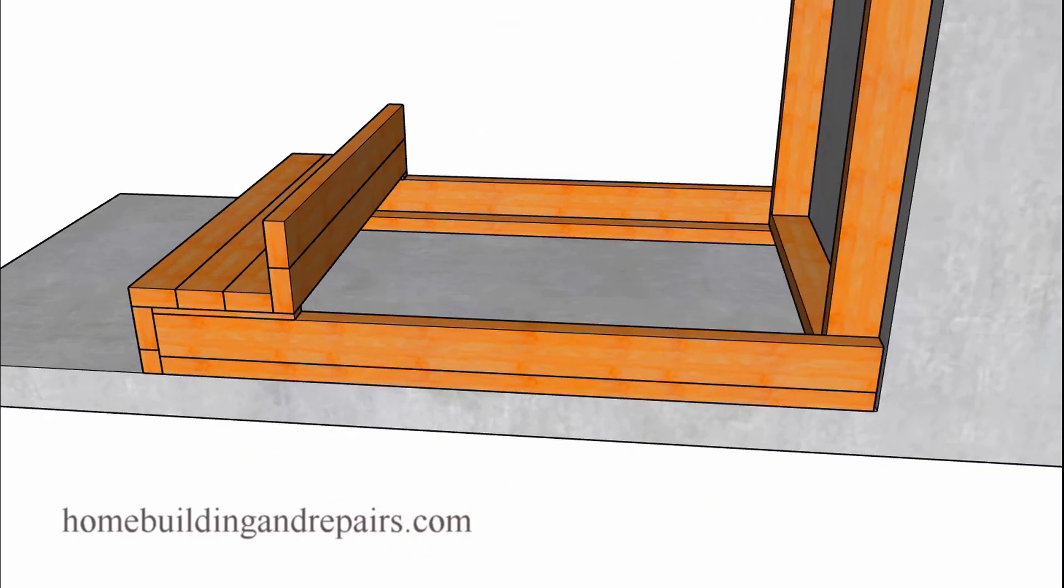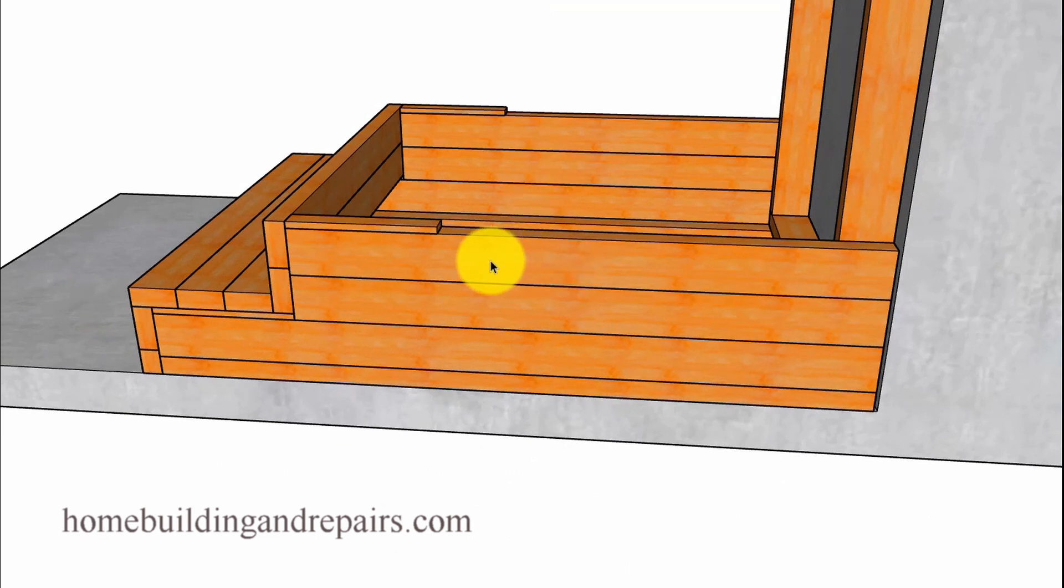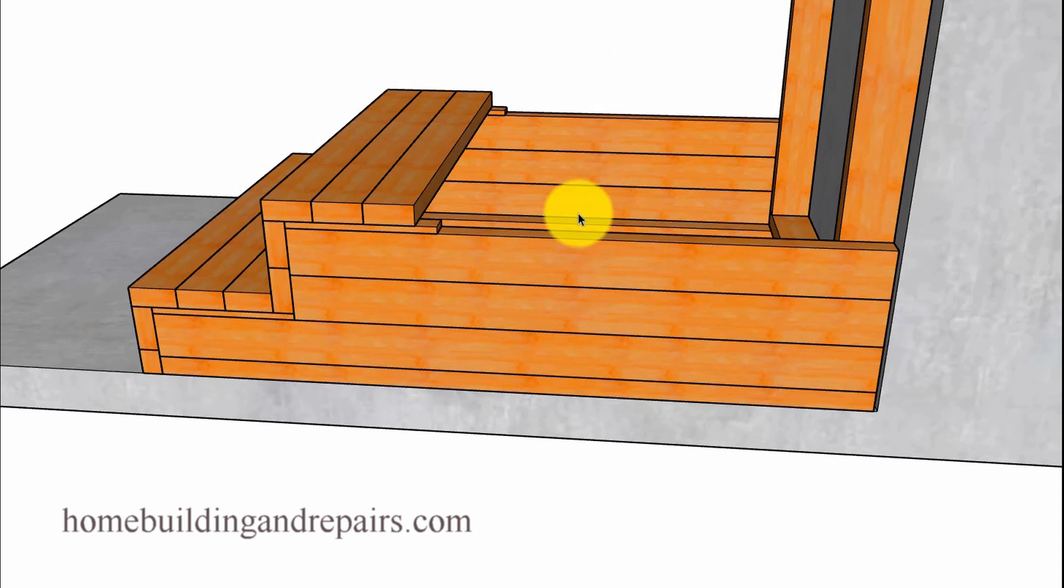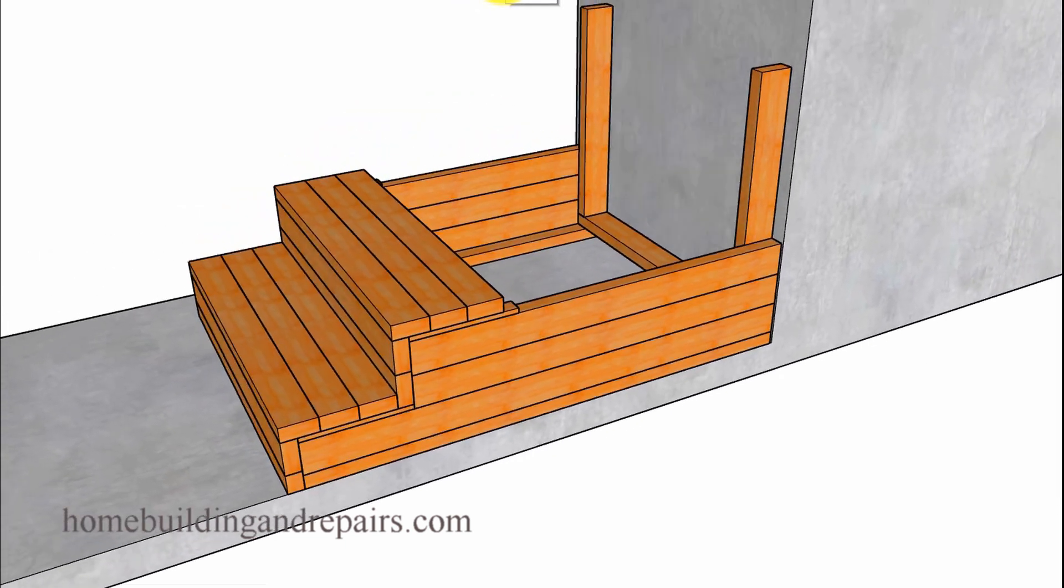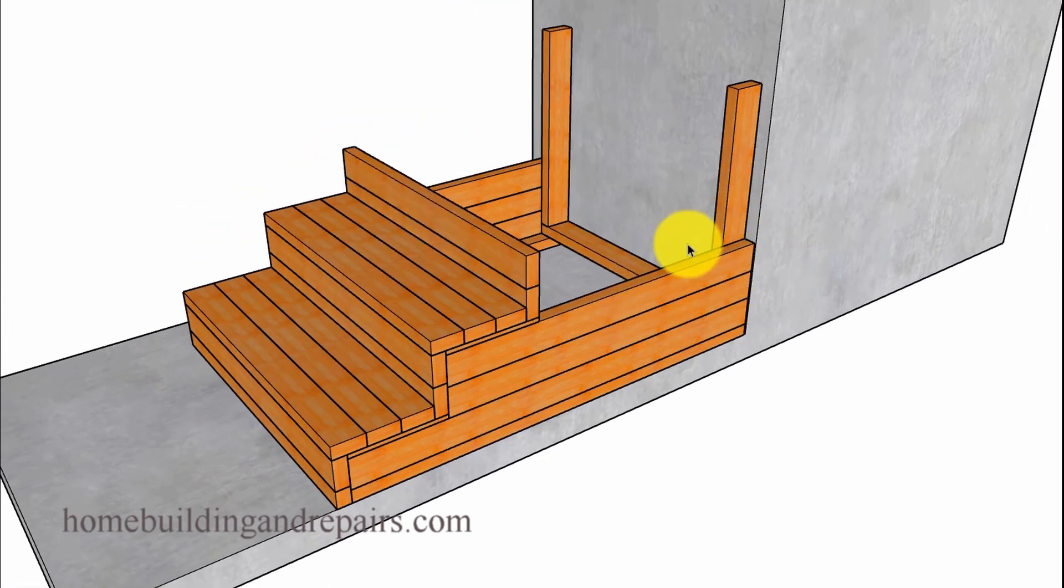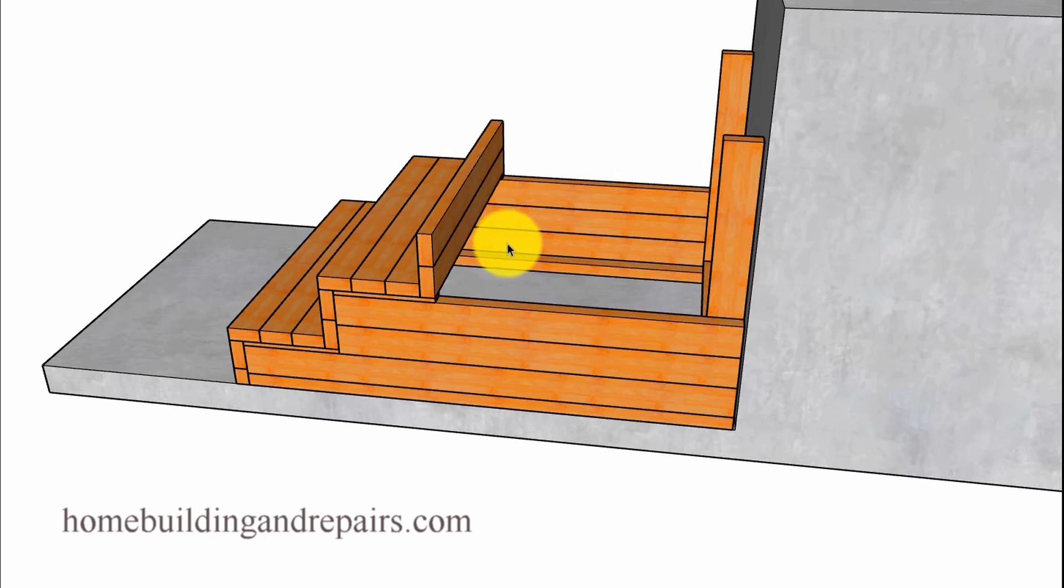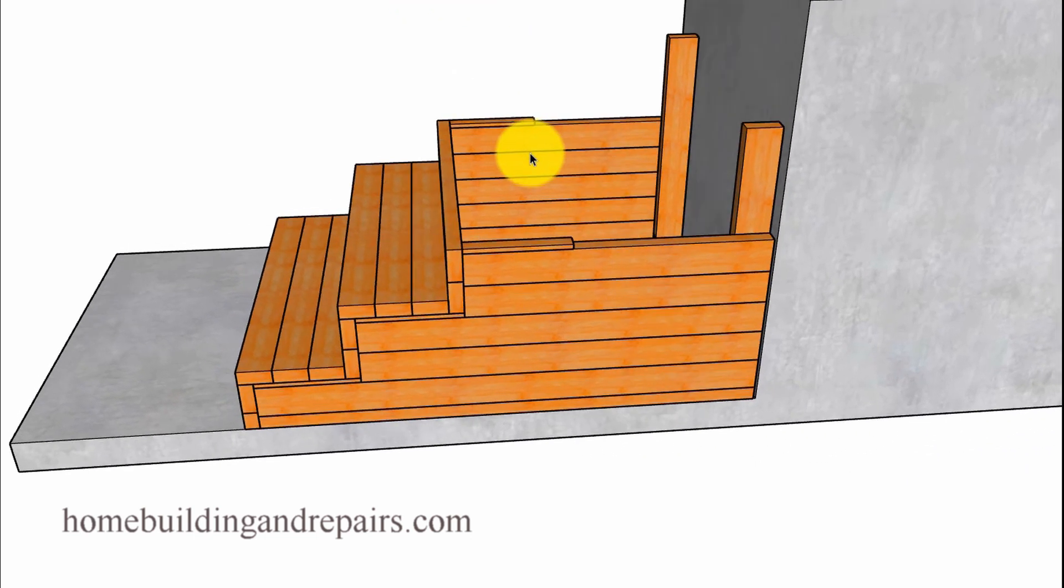We're going to go ahead and put a couple more support boards in. And these braces here are critical. They're going to hold this together. And you might actually need to put a couple of them over here. If you think it's going to be weak, it wouldn't be a bad idea to put another brace in. And that can always be done after the stairway is built. But while you're building it and you get to a certain point, you're not going to be able to get to it from the back.